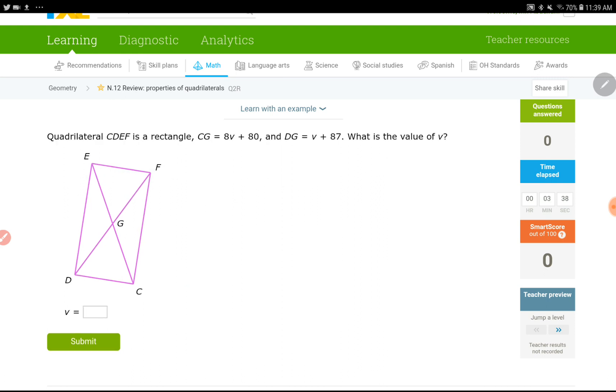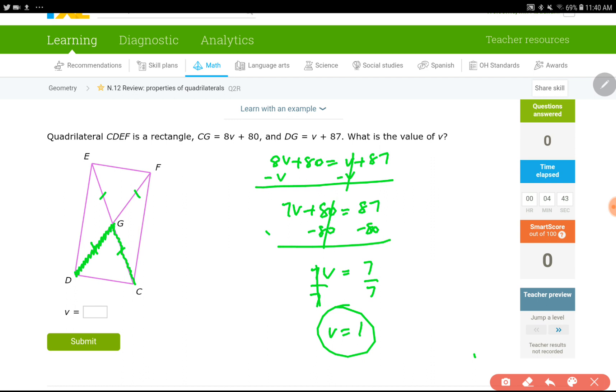Okay, now we have a rectangle, let's work on this one. Okay, CG and DG are given. CG is right here and DG. They are equal, these two should be equal. It's to be honest all of them, like this one here and that one here, those are equal as well. All four of these are equal. So 8v plus 80 equals to v plus 87. Subtract 1v. 7v plus 80 equals 87, and subtract 80. 7v equals to 7. Divide everything by 7, so v equals to 1. So that's for the rectangle.